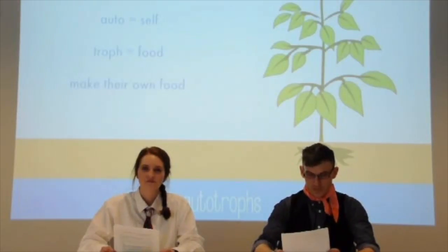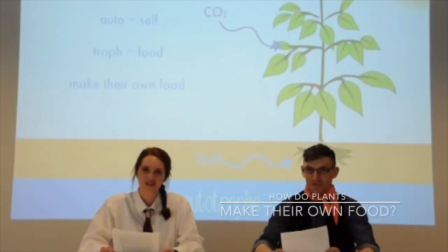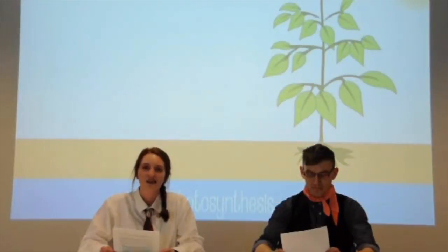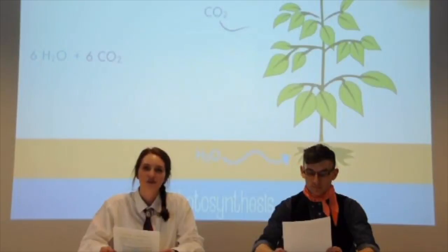We all know that energy needs for humans and animals are achieved by the food that we eat, which for the most part of the animal kingdom is derived from plants. But how is it then that plants make their own food? Through a series of complex reactions, plants are able to take carbon dioxide, water and energy from the sun and turn it into the delicious plant food known as glucose, as well as the oxygen we breathe.